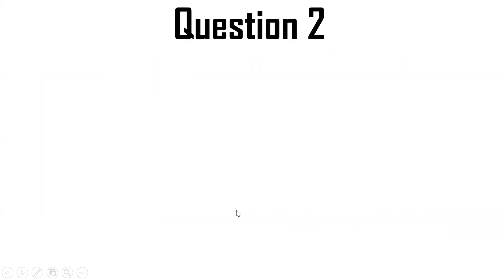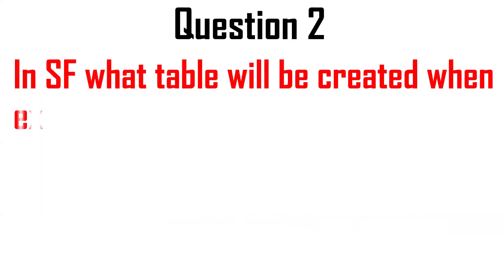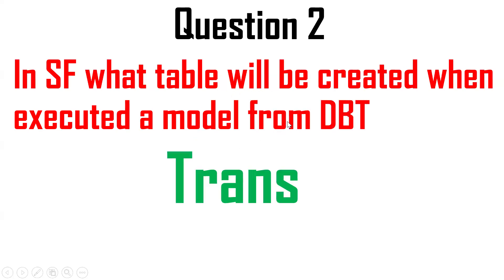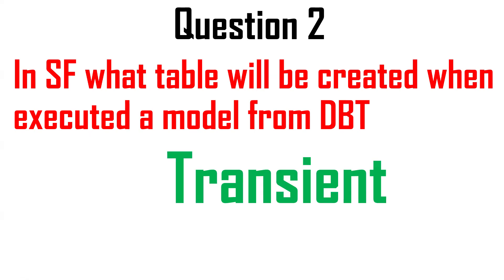Second question: in Snowflake, what table is created when you execute any model from DBT? By default, it will be a transient table. So a transient table will be created in Snowflake when you run the `dbt run` command on any model.